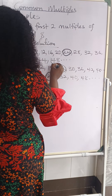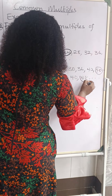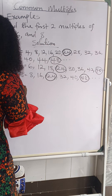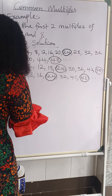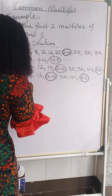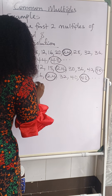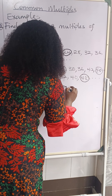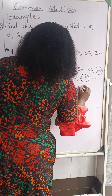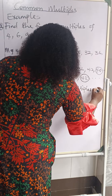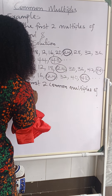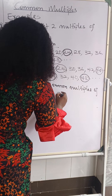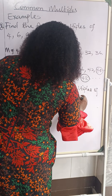Forty-eight — we have forty-eight here in fours, forty-eight in sixes, and forty-eight in eights. So therefore the first two common multiples of four, six, and eight are twenty-four and forty-eight. That's our answer.